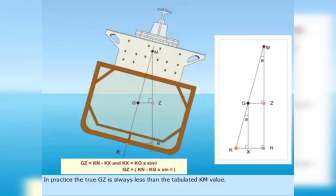In practice, the true GZ is always less than the tabulated KM value. Therefore, a negative correction is applied to the tabulated KM value to obtain the true GZ value.